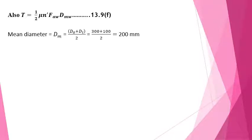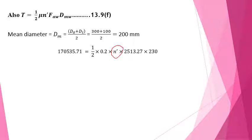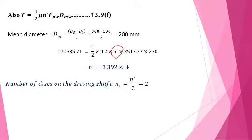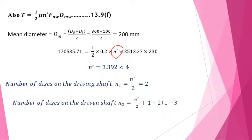With the torque known, equation 13.9F for uniform wear is applied with the mean diameter dmw = (D_o + D_i) / 2 = 200 mm. Substituting the torque and other parameters, the number of pairs of contact surfaces n' is found to be 3.392, which is rounded up to 4. The number of plates on the driving shaft is n1 = n' / 2 = 2, and the number on the driven shaft is n2 = n' / 2 + 1 = 3.